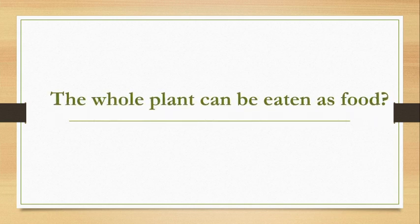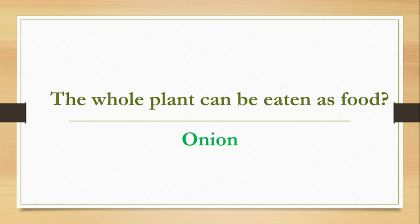Which plant can be eaten as food in its entirety — which plant item can we eat whole? The answer is onion, because with onions we eat all the parts. The whole plant can be eaten as food.